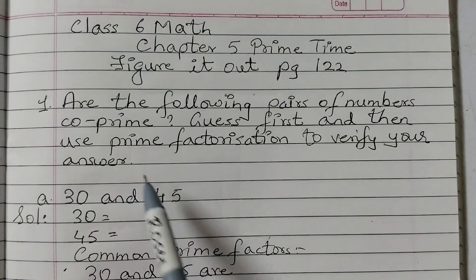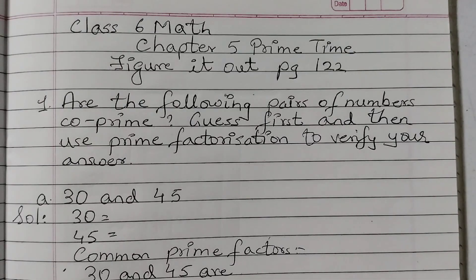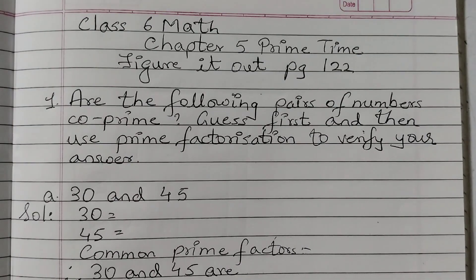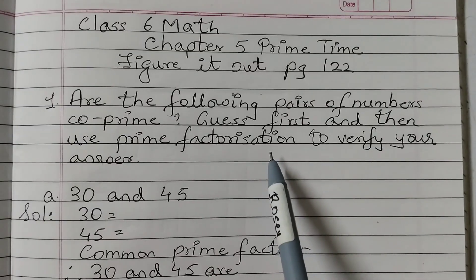So first you must know what are co-prime numbers. Two numbers are said to be co-prime to each other if they have no common factor other than 1. So first we need to make a guess and then we need to use prime factorization to verify our answer.